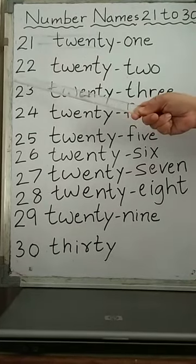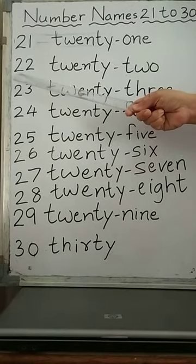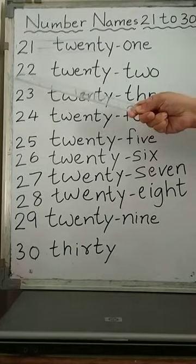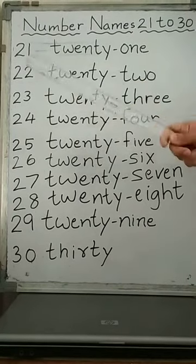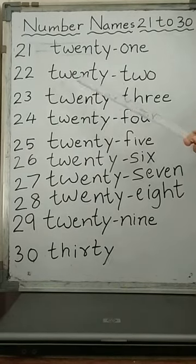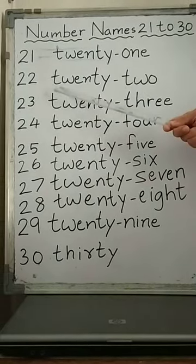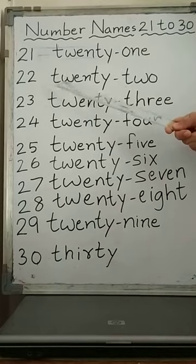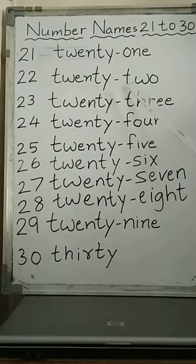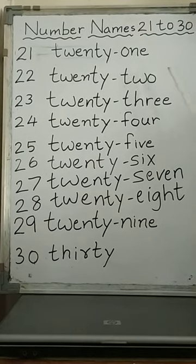Similarly, 22. Now in this numeral 22, 2 is at 1's place and this 2 is at 10's place. So the number name becomes 22 and we spell it as T-W-E-N-T-Y and 2 spelling T-W-O-2.